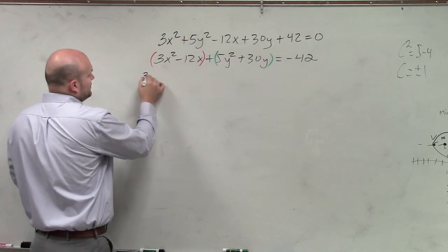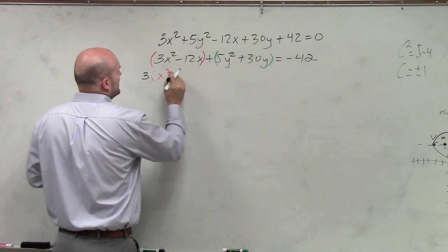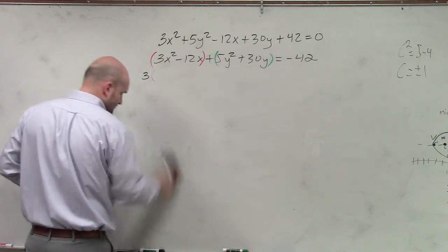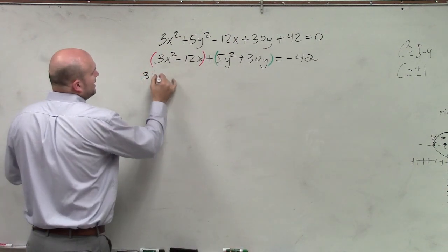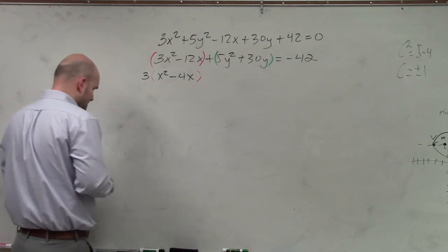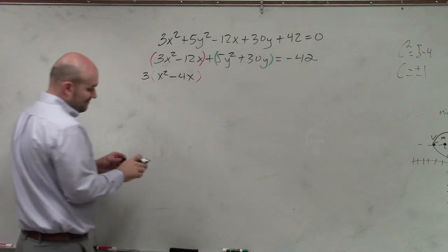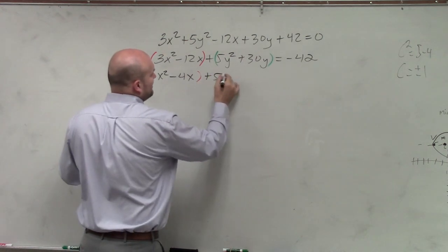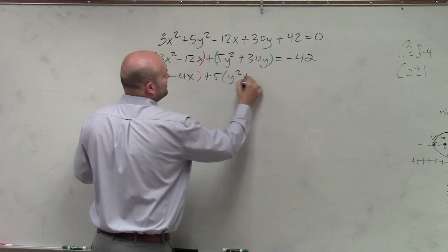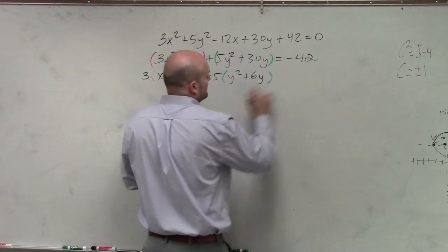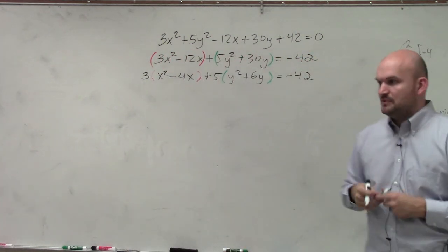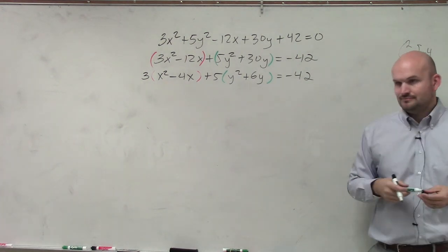So I'll factor out a 3, and I'm left with x² - 4x. And then over here, I have a 5 in front. I don't want a 5 there, so I'm going to factor out a 5. By factoring out a 5, I'll be left with y² + 6y = -42. Is everybody good so far with what math I have done?